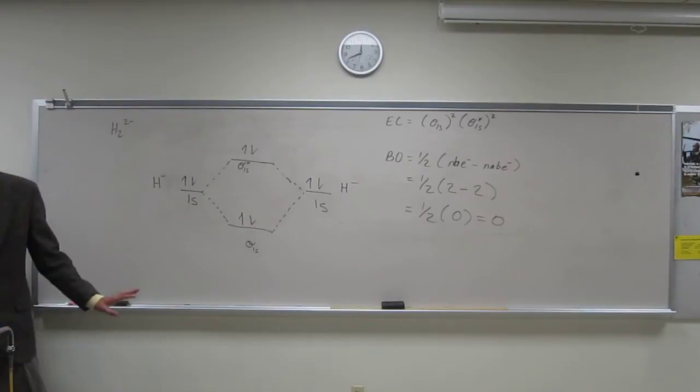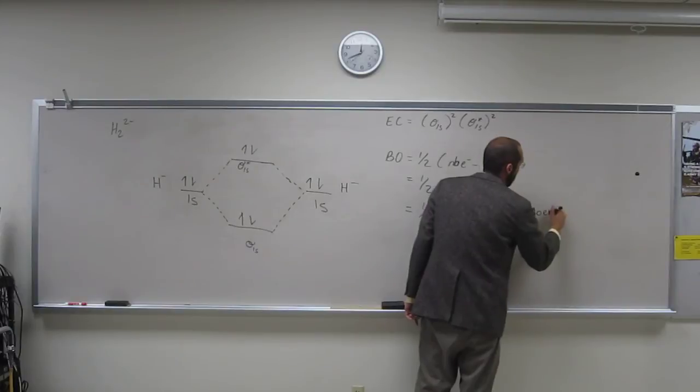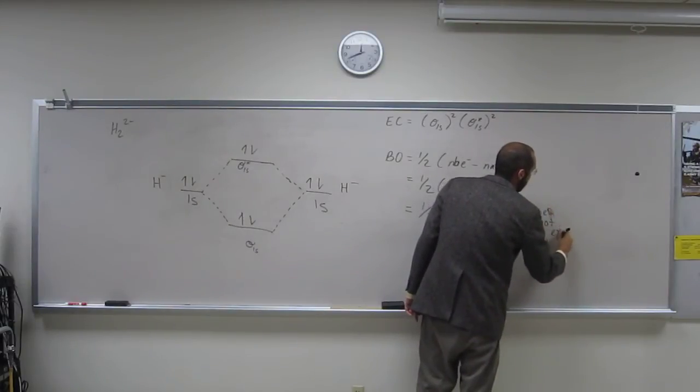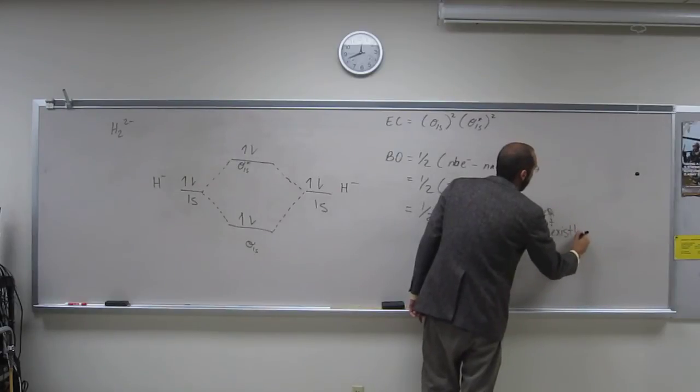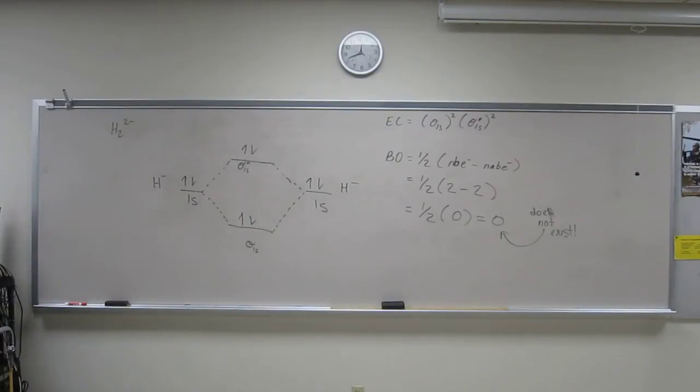And sigma star 1s 2. Okay, I know it said if it exists, and this does not exist. Does that make sense? Is there any questions on that? So does that answer your question about antibonding electrons? Yeah, which, what are those electrons? How do you know which electrons those are? Which electrons are which? The antibonding.